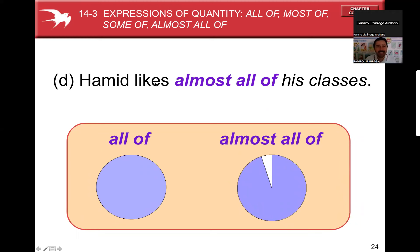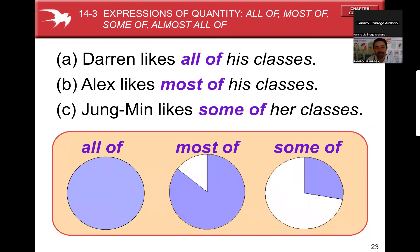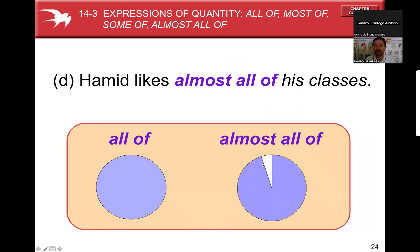OK, let's compare 'all of' with 'almost all of.' If I tell you Amit likes almost all of his classes, it means there's one class Amit doesn't like. Now let's compare: 'most of' versus 'almost all of.' You can see we're adding 'almost' to 'all of.' If Alice likes most of her classes, maybe there are two classes she doesn't like. But with 'almost all of,' we're talking about only one class she doesn't like.